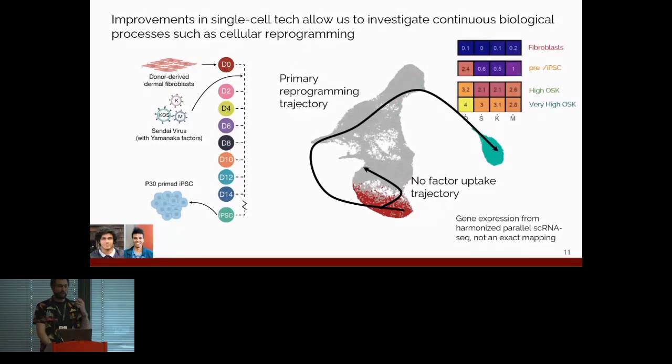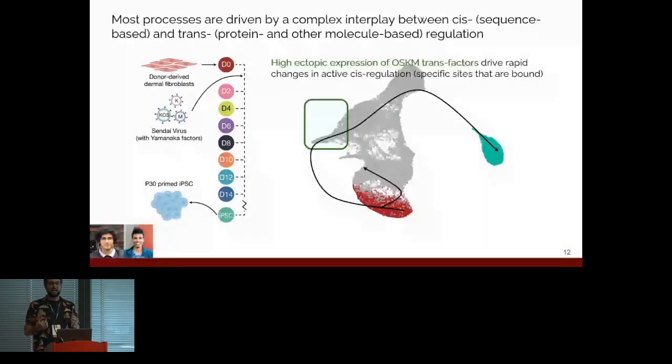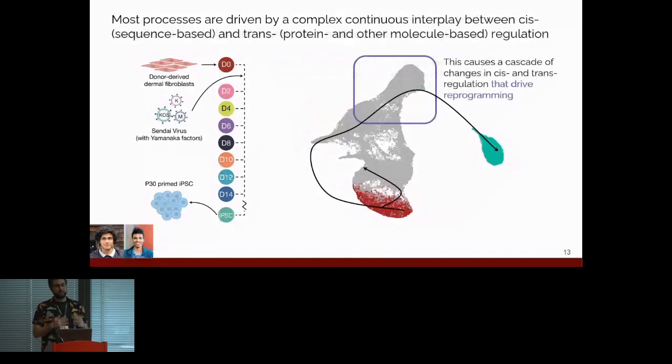But you'll note that a lot is happening here, that initially, the cells that take off the viruses have high ectopic expression of OCT, SOX, KLF, and MYC. This is a change in trans-regulation. These factors then go and bind to their binding sites, opening up chromatin and binding them. CIS-regulation. Then, those changes in CIS-regulation change endogenous gene expression, trans-regulation. Those proteins then go and affect their binding sites, CIS-regulation, and this continues on and on, kind of like a differential equation, until you reach your steady state, which is IPSCs.